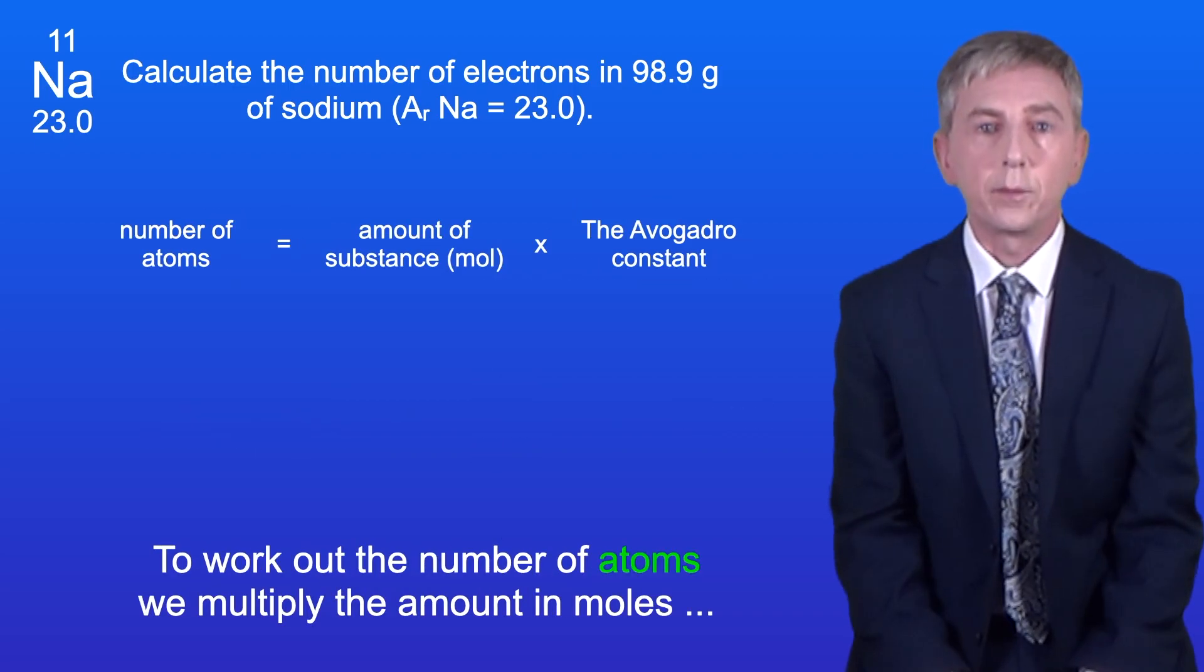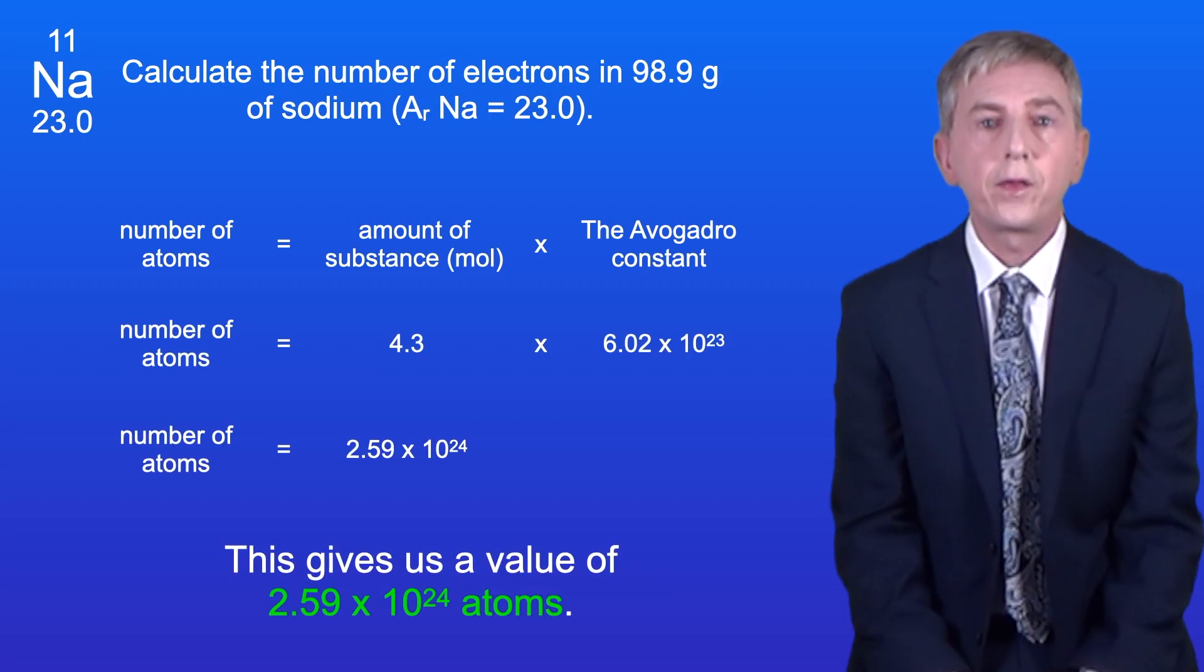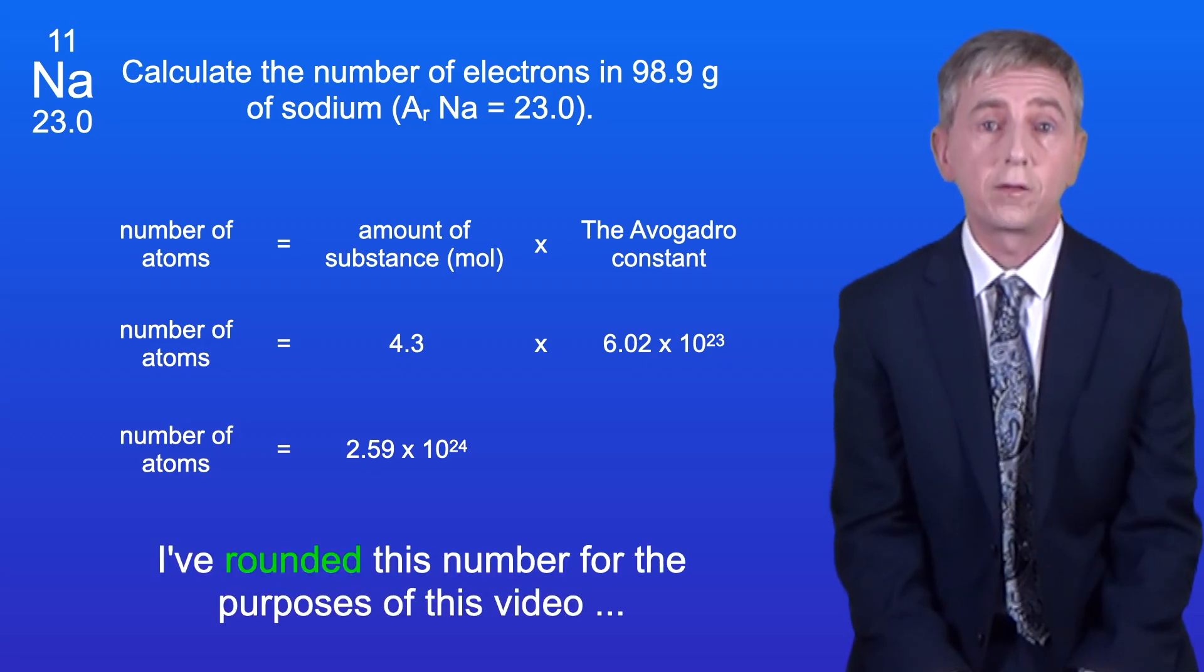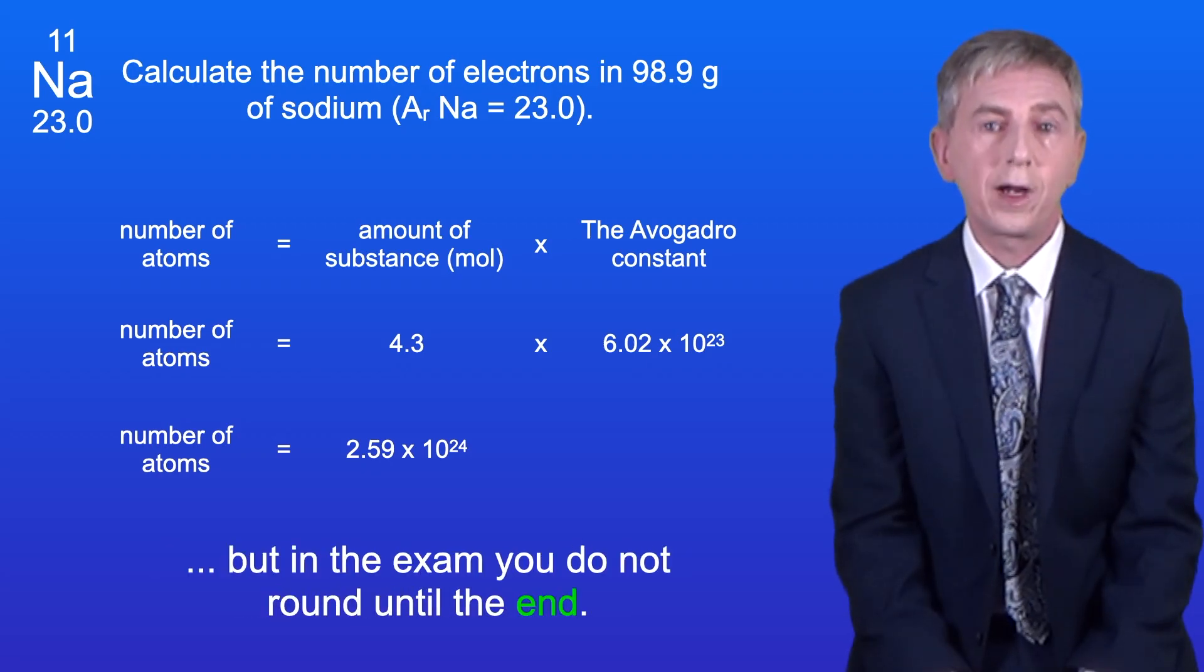To work out the number of atoms we multiply the amount in moles by the Avogadro constant. And this gives us a value of 2.59 times 10 to the power of 24 atoms. And I've rounded this number for the purposes of this video, but in the exam you don't round until the end.